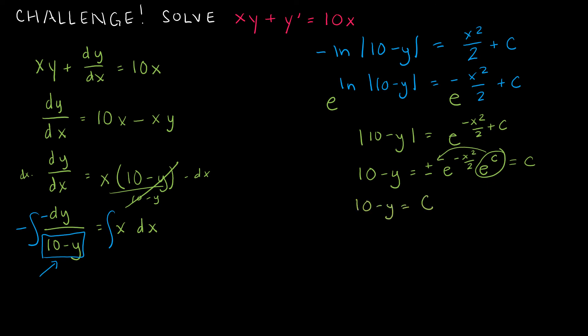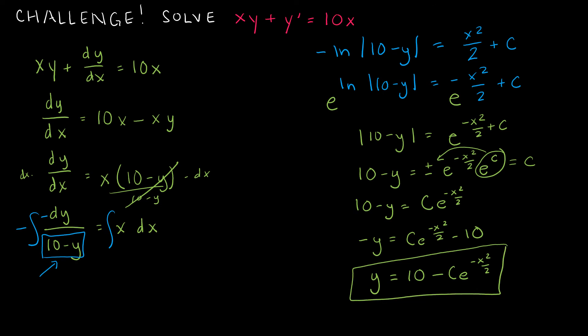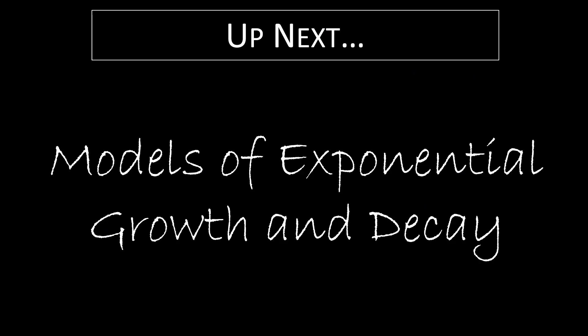So 10 minus y equals c times e to the negative x squared over 2. Subtracting 10 from each side and multiplying by negative 1 gives y equals 10 minus c times e to the negative x squared over 2, which is the final solution. If you got there, great job — that was a lot of review from calculus 1. Up next we'll look at models of exponential growth and decay.